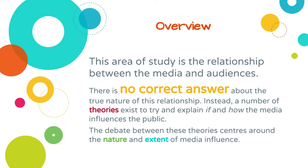This unit is the study of the relationship between media and audiences. The big question we're answering is: does the media have an influence, positive or negative, on audiences? The one thing you need to take away is that there is no definitive answer — there is absolutely no correct answer to this question. We do not know the true nature of the relationship between media and audience. Instead, we have a number of theories that all try to explain if and how the media influences the community, and none of them are 100% accurate.